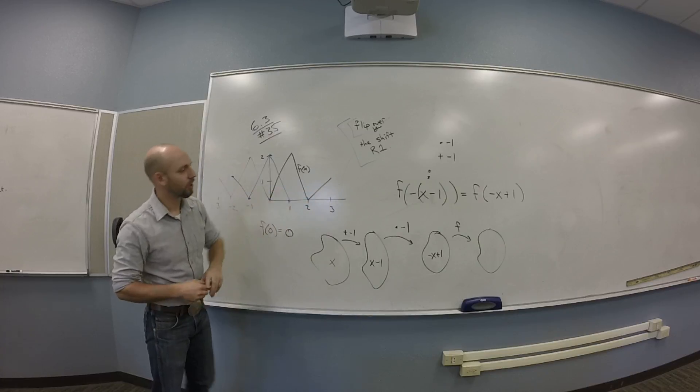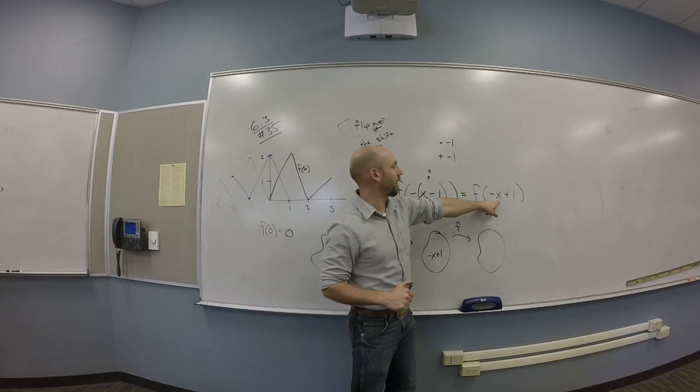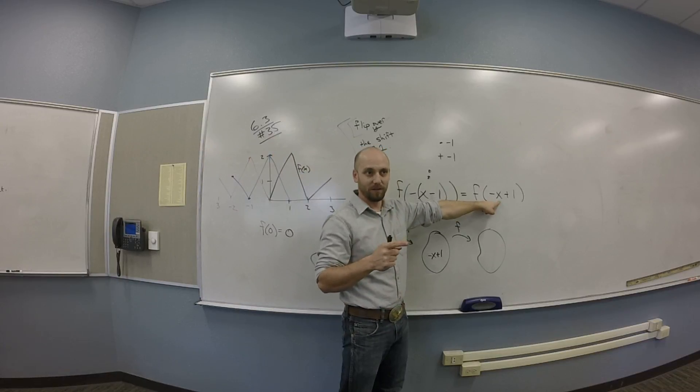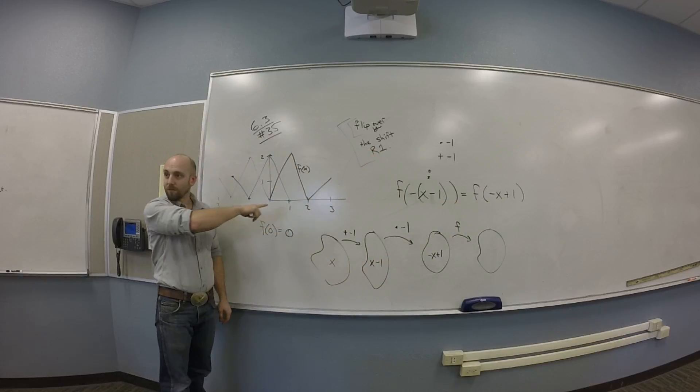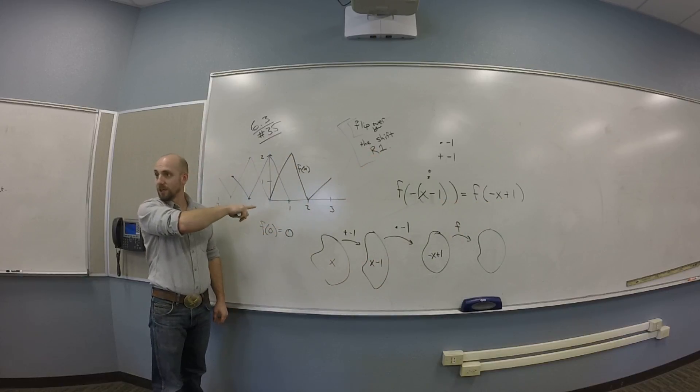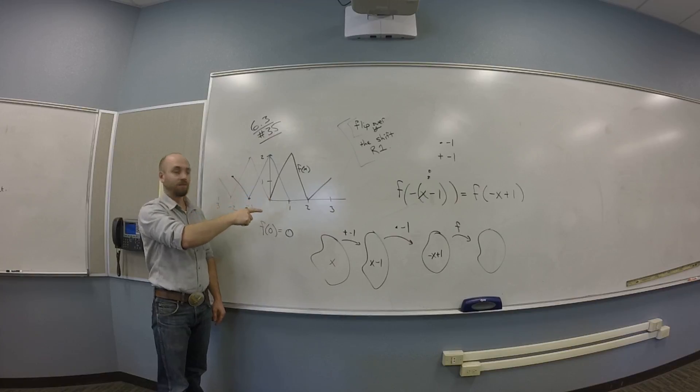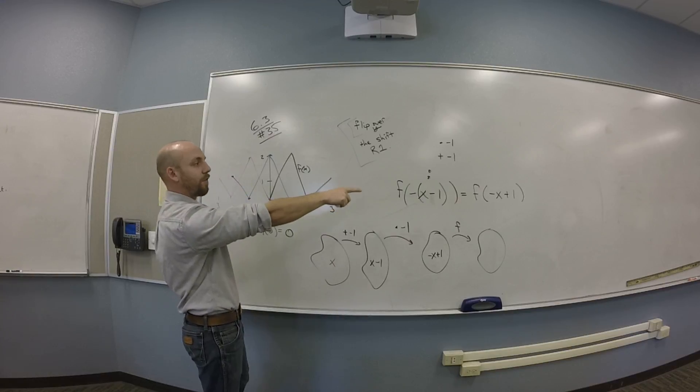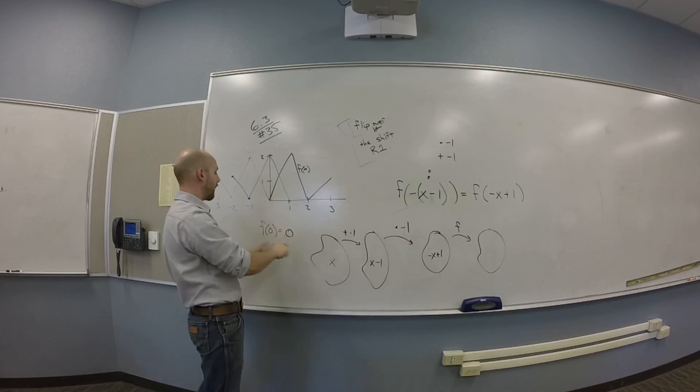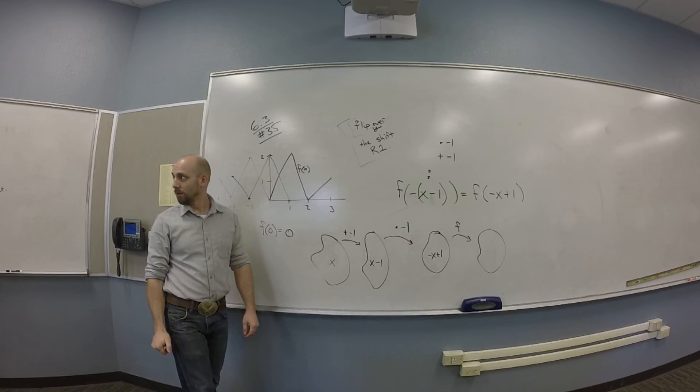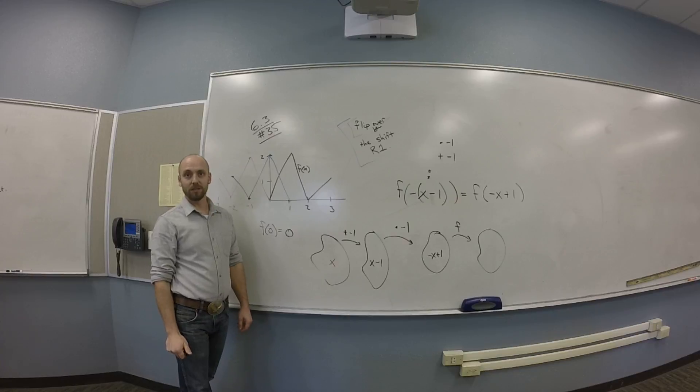If I plug 1 into this function, I should get 0 back out. That's what my blue line would indicate, my final product for the answer here. So I get to check that. If I plug 1 in there, I get F of minus 1 plus 1 is F of 0. So F of 0 is 0, so at least I kind of check. You cool with that?